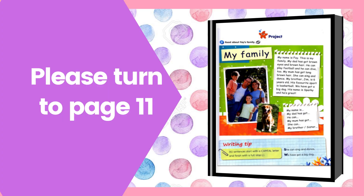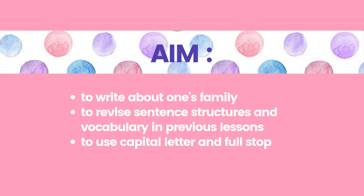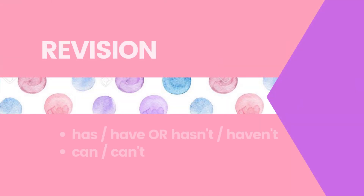Before we proceed with our lesson, please get ready with your Get Smart Plus 3 and turn to page 11. I hope at the end of this lesson, you will be able to write about one's family, use capital letters and full stops, and revise sentence structures and vocabulary from our previous lessons. We will revise the use of has and have, or hasn't and haven't, and also the use of can and can't.